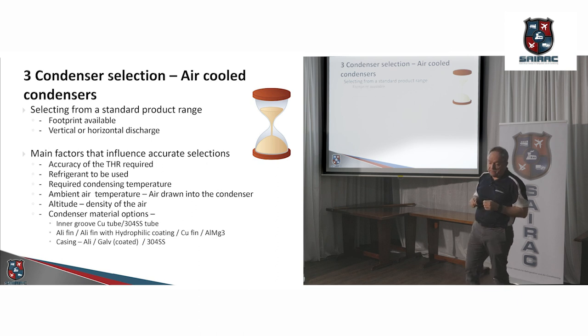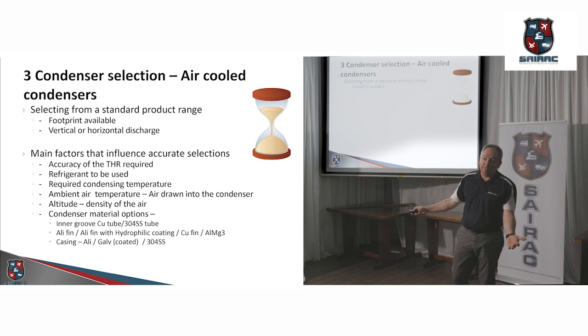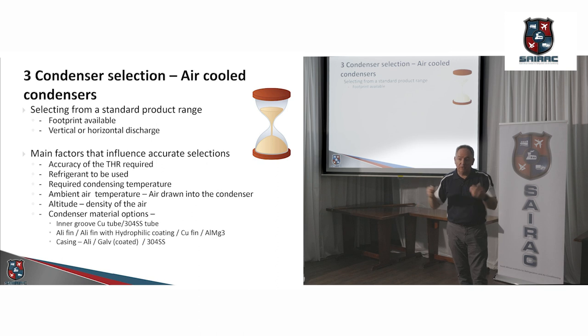We're going to be selecting something from the standard product range. What are your main deciding factors? What's your footprint? So you climb on the supermarket roof, maybe you're doing a refurbishment. What's the space that's available? You can't take the old one off and put the new one on. You've got to have both of them running in parallel and gradually switch over. So your footprint quite often decides what kind of condenser you're going to select.